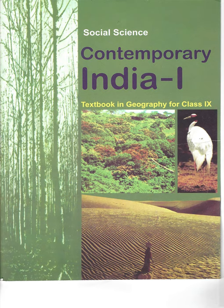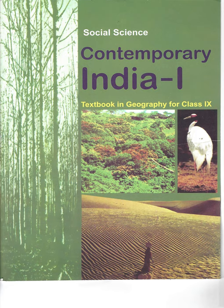It is perennially snow-bound and a number of glaciers descend from this range. The range lying to the south of the Himadri forms the most rugged mountain system and is known as Himachal or Lesser Himalaya. The ranges are mainly composed of highly compressed and altered rocks. The altitude varies between 3,700 and 4,500 meters and the average width is 50 km. While the Pirpanjal range forms the longest and the most important range, the Dhauladhar and the Mahabharat ranges are also prominent ones. This range consists of the famous valley of Kashmir, the Kangra and Kullu Valley in Himachal Pradesh. This region is well known for its hill stations.